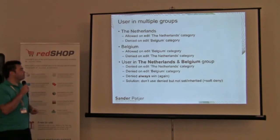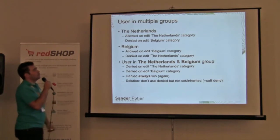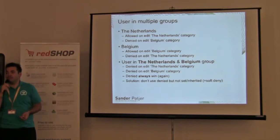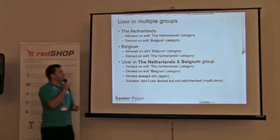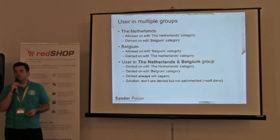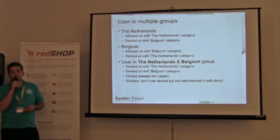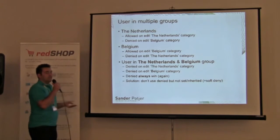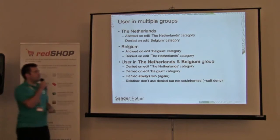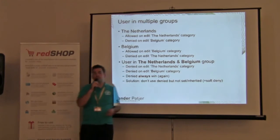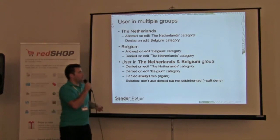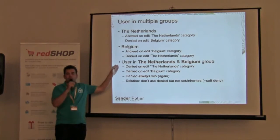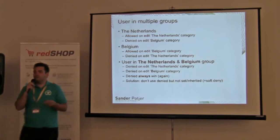Some notes on the ACL system: if a user is in multiple groups — for example, the Netherlands group can create in the Netherlands category but has a deny on Belgium, and vice versa — assigning a user to both groups causes a conflict because denied always wins. The solution: simply don't use denied if not needed. Just allow the Netherlands category and leave Belgium as 'not set' or inherited — that's already a soft deny. This keeps you flexible when assigning users to multiple groups.